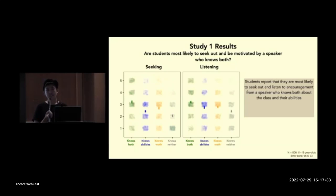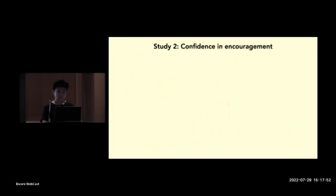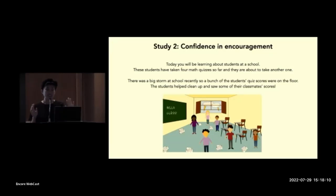So next, what we wanted to do is dig into this effect a bit more and ask, what is underlying this? Why are students seeking out and listening to encouragement from people who are high in both? And one possibility is that students may be more confident in others' encouragement and performance predictions when they're more knowledgeable about both of these. Okay, so to test this possibility in the next study, we actually created a third-person task to more easily manipulate a speaker's knowledge. So we told participants, so today you'll be learning about students at a school. These students have taken four math quizzes so far, and they're about to take another one. There was a big storm at school recently, so a bunch of the students' quiz scores were on the floor. The students helped clean up and saw some of their classmates' scores.